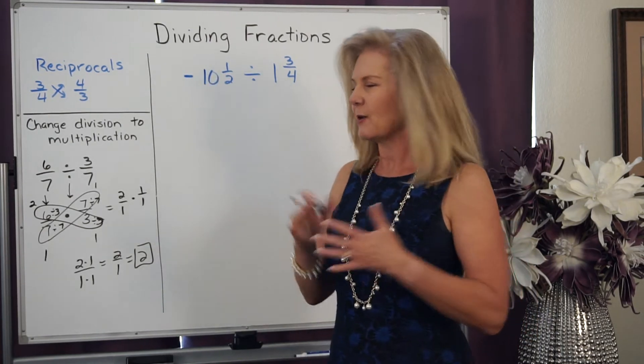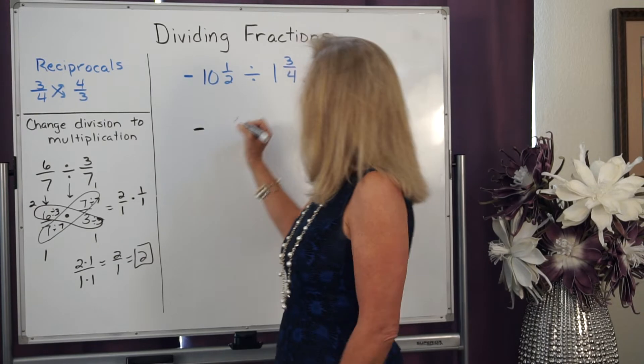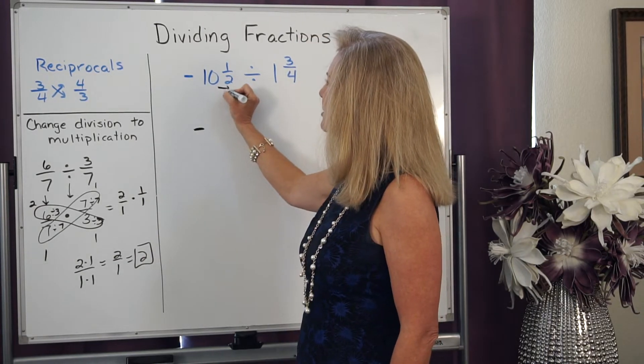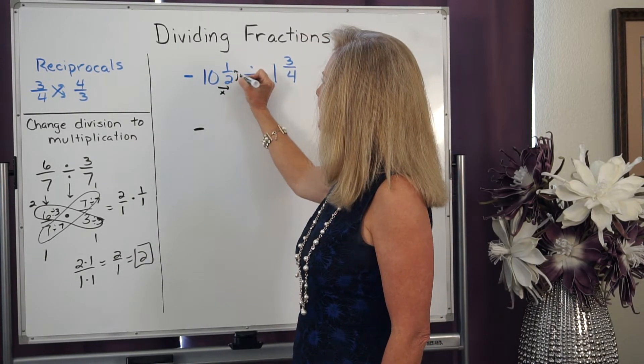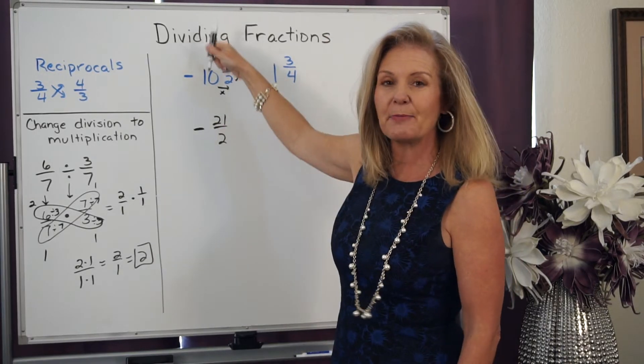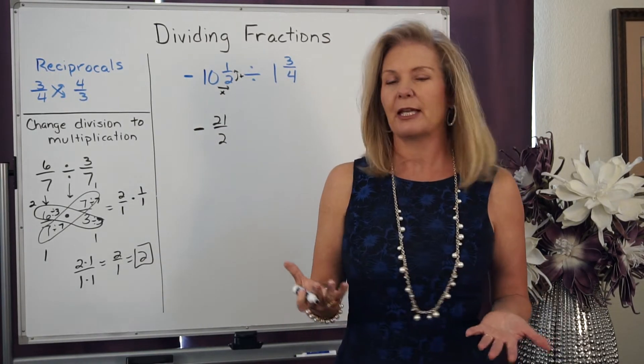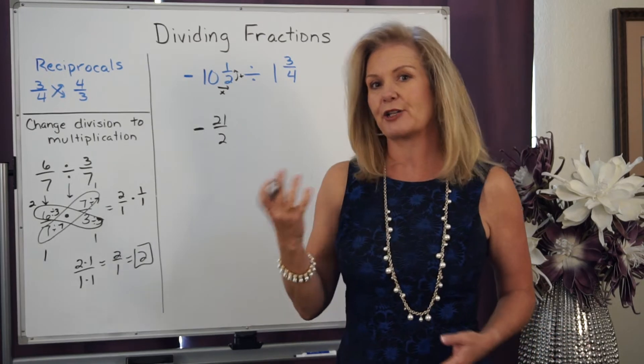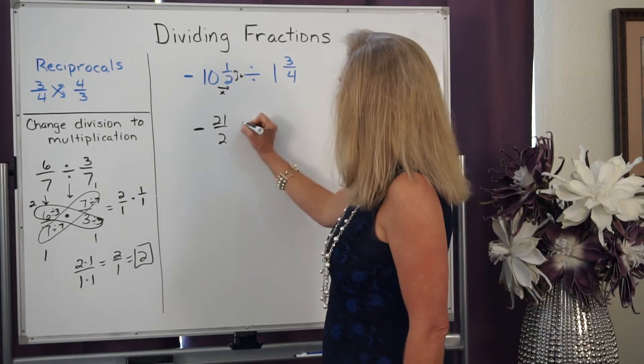Now this first one is negative, so I've got to keep that negative going. But 10 times 2 is 20 plus 1 is 21 halves. They're the same thing. I just named them as an improper fraction from a mixed number.